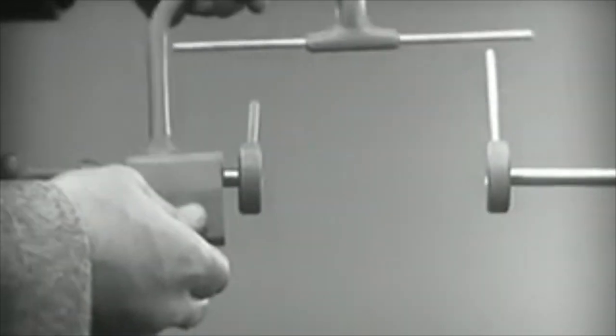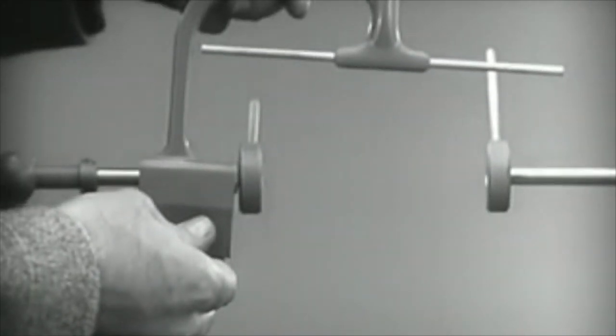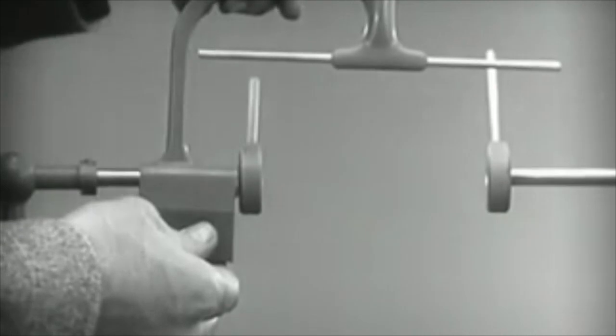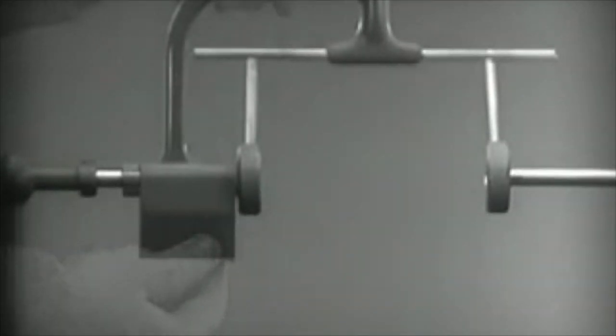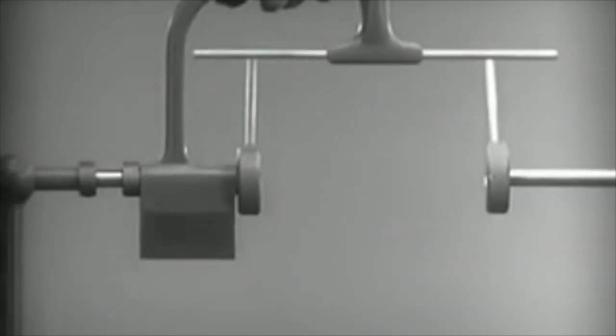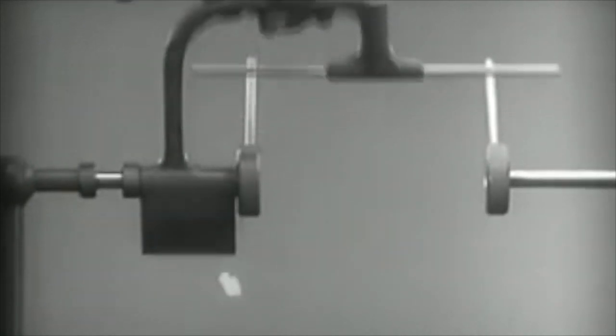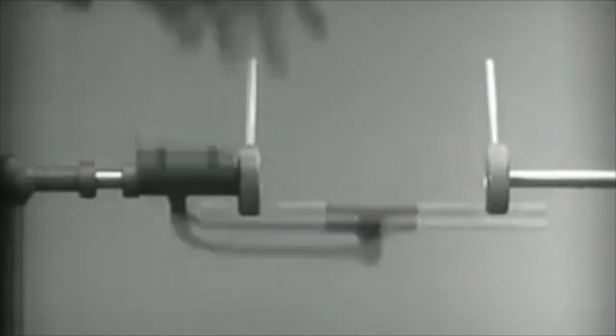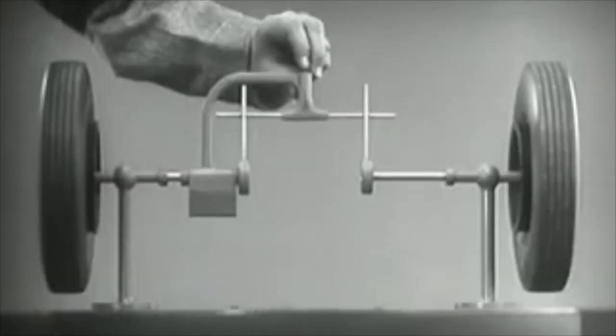Let's get something to hold this bar in place so that it will press against the spokes. Notice that this support is not locked to the axle - it turns freely. Now we can spin the wheels by rotating the support.